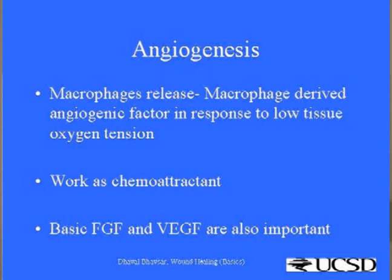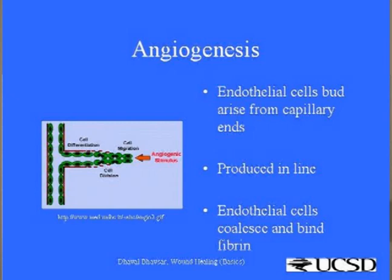Macrophages working in the center of the wound to remove dead tissues can sense low oxygen tension and release this factor. This chemoattractant and other growth factors like basic fibroblast growth factor and VEGF induce migration of endothelial cells from the margins of the wound. These endothelial cells bud from capillary ends on the edges of the wound and initially produce a cylinder of cells. Once they reach their target, they stop growing, the center of the cylinder undergoes apoptosis, and the lumen is created. The endothelial cells coil together and bind with fibrin.